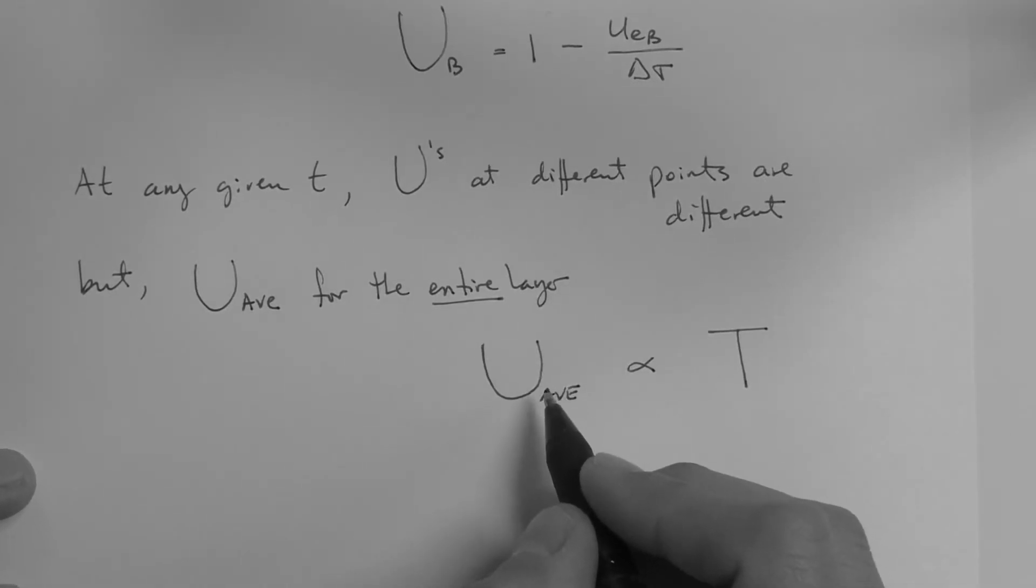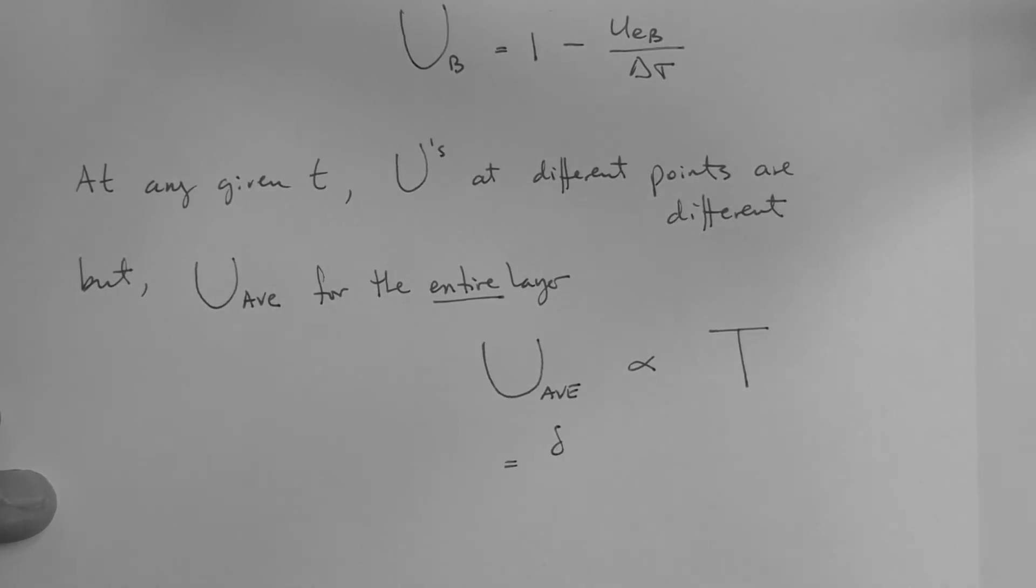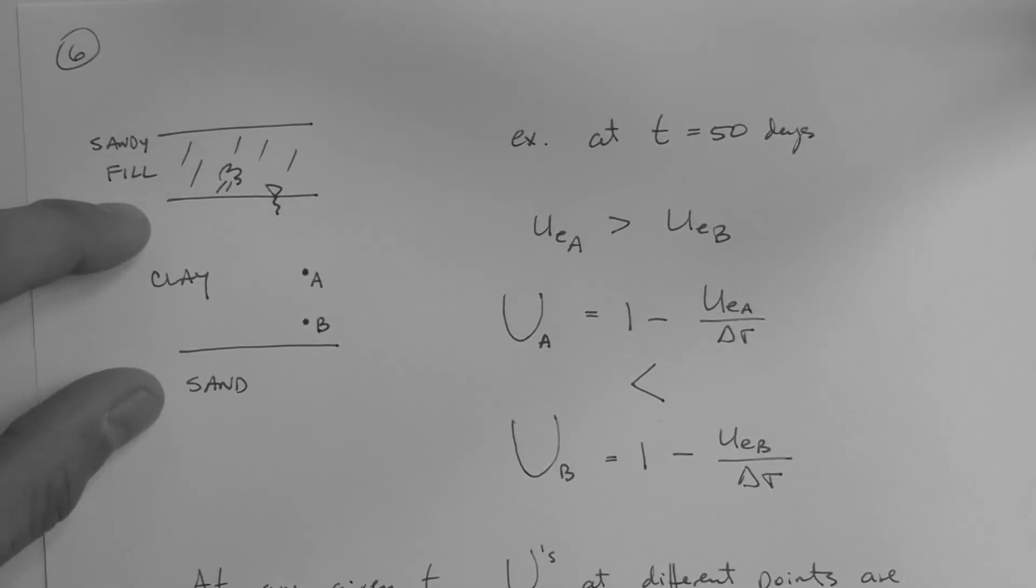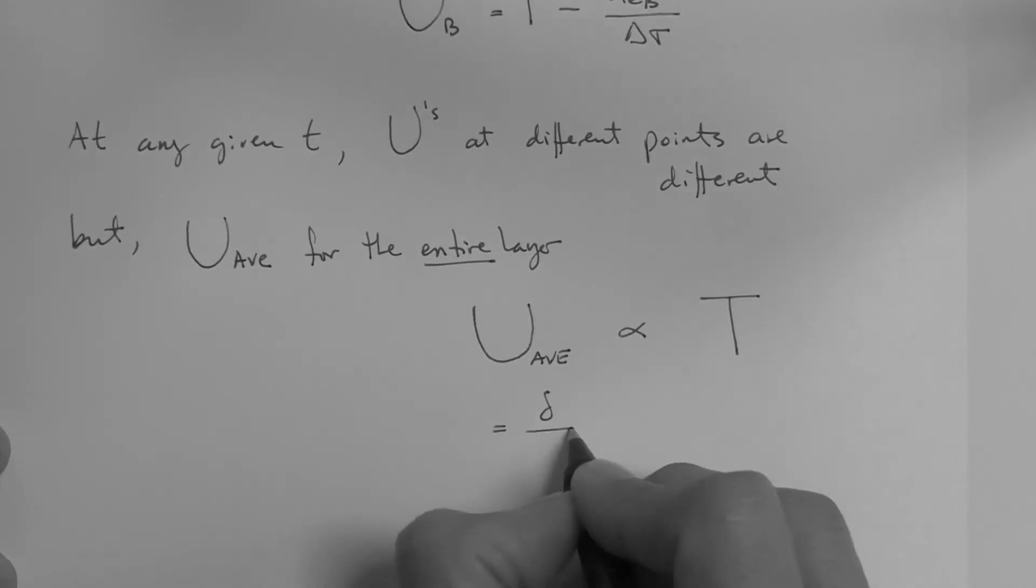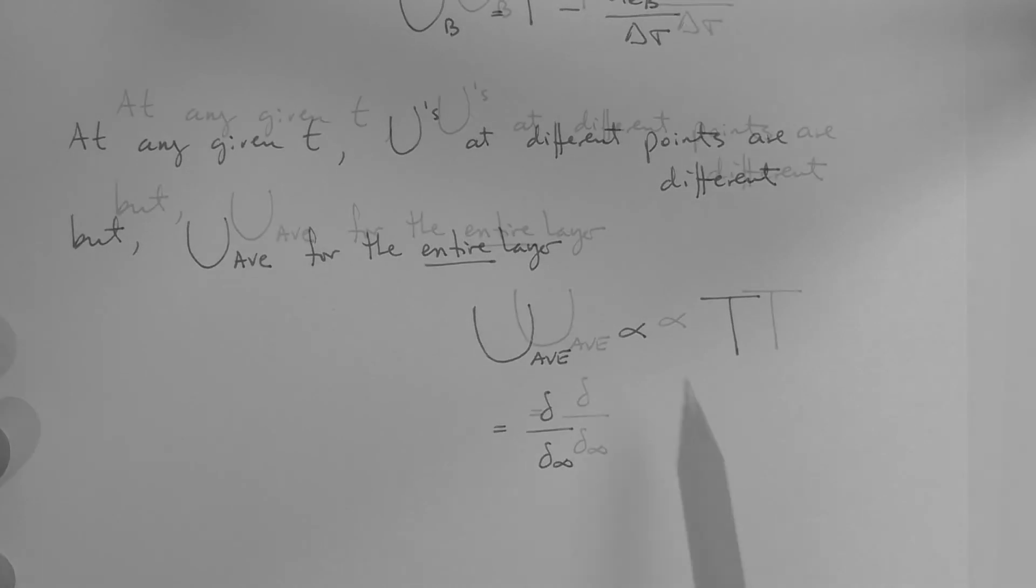This average degree of consolidation by definition is expressed as the settlement at a given time, meaning the level of squeezing or the distance that the layer squeezes at a given time, divided by the ultimate settlement. So what is the proportionality between these two parameters?